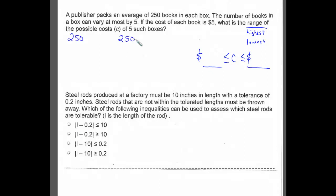In the boxes, there are two possible scenarios. The box can vary by 5, so that means that in one box there might be 5 less than 250, which would be 245 books.